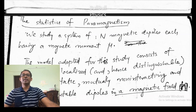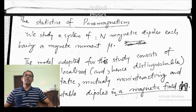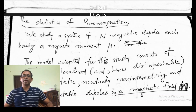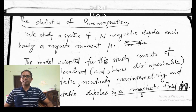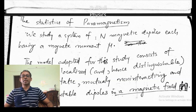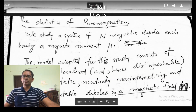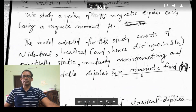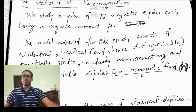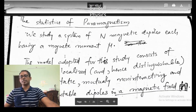Hello everybody. Today we are going to look at the statistics of paramagnetism. We are going to consider N magnetic dipoles — a system of N magnetic dipoles, each having a magnetic moment mu.